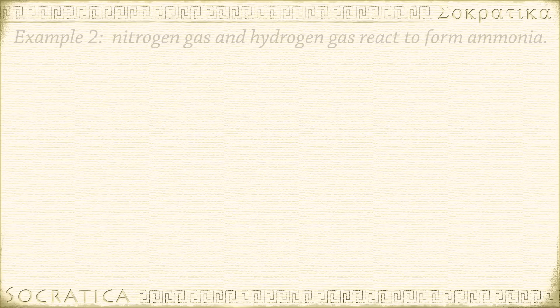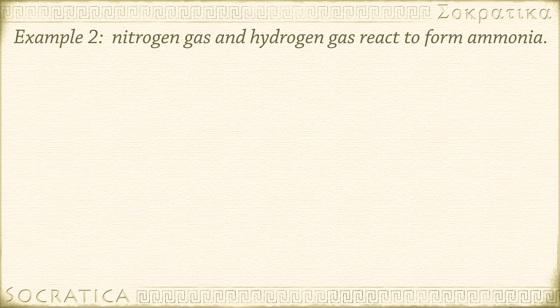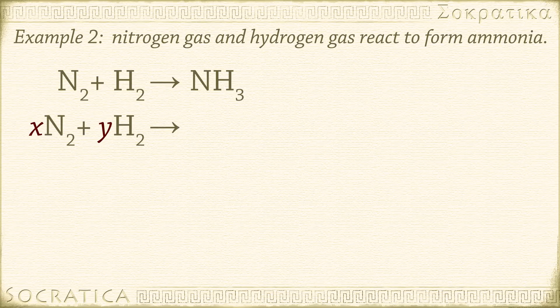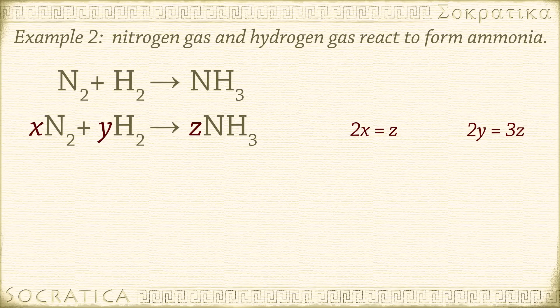Here's our second example. Nitrogen gas and hydrogen gas react to form ammonia. We write that as N2 plus H2 yields NH3. That's unbalanced. Let's put in some unknown coefficients. XN2 plus YH2 yields ZNH3. Write down the relationships we know. Let's look at nitrogen. The number of nitrogen atoms on the left must equal the number of nitrogen atoms on the right. 2X equals Z. Next, look at hydrogen. 2Y equals 3Z.